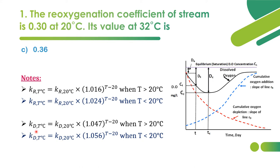The deoxygenation coefficient at t°C is: kd(t) = kd(20) × (1.047)^(t−20), applicable when temperature is greater than 20°C. When temperature is less than 20°C, use: kd(t) = kd(20) × (1.056)^(t−20). Note the different constants: 1.016, 1.024, 1.047, and 1.056 must be carefully applied.